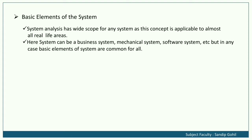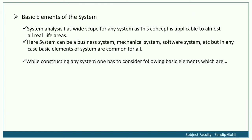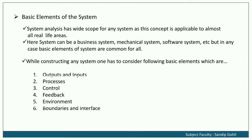Basic elements of system. System analysis has wide scope for any system, as this concept is applicable to almost all real-life areas. Systems can be a business system, mechanical system, software system, etc. But in any case, the basic elements of systems are common for all. While constructing any system, we must consider the following basic elements: 1st output and inputs, 2nd processes, 3rd control, 4th feedback, 5th environment, and 6th boundaries and interface.